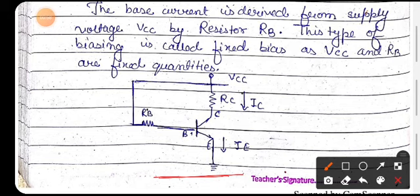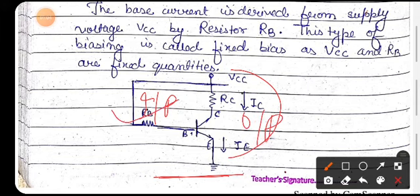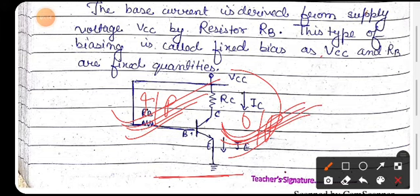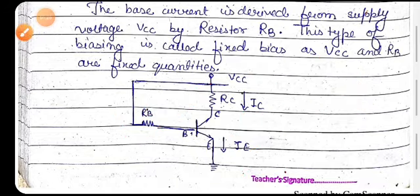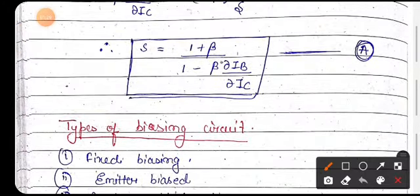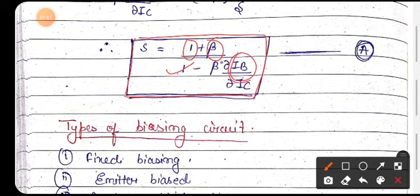Now, how do we find stability? This is the input loop and this side is the output loop. We apply KVL in the input loop to find IB, and verify values in the output loop. Our aim is to find IB and VCC, because the stability factor depends on IB. We find IB and differentiate to get the stability factor.